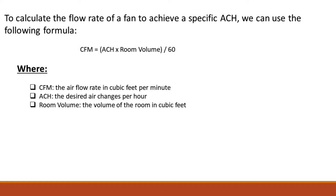Where: CFM is the air flow rate in cubic feet per minute; ACH is the desired air changes per hour; and Room Volume is the volume of the room in cubic feet.